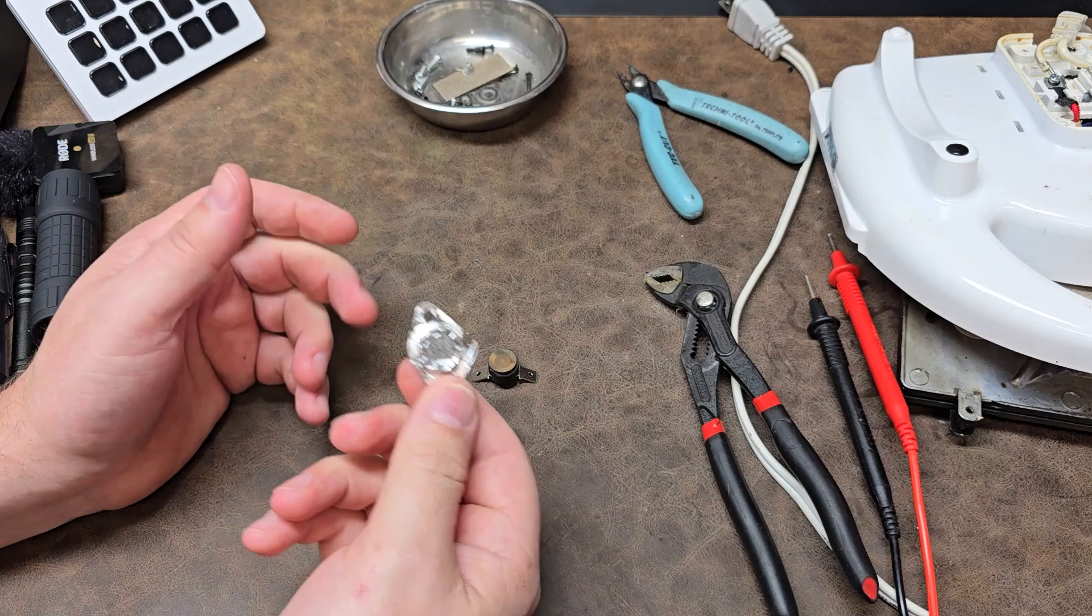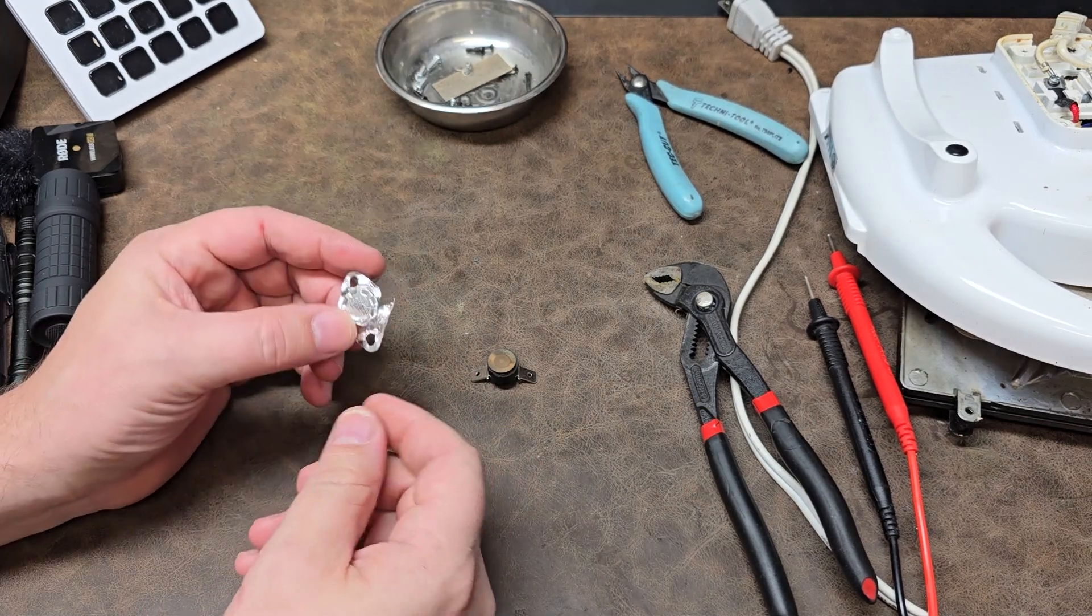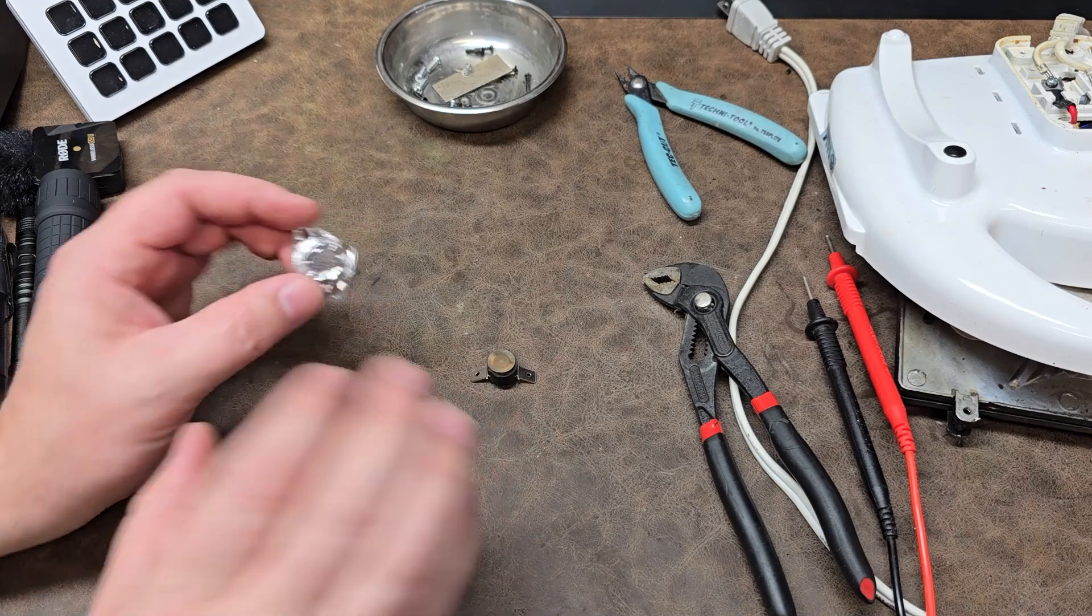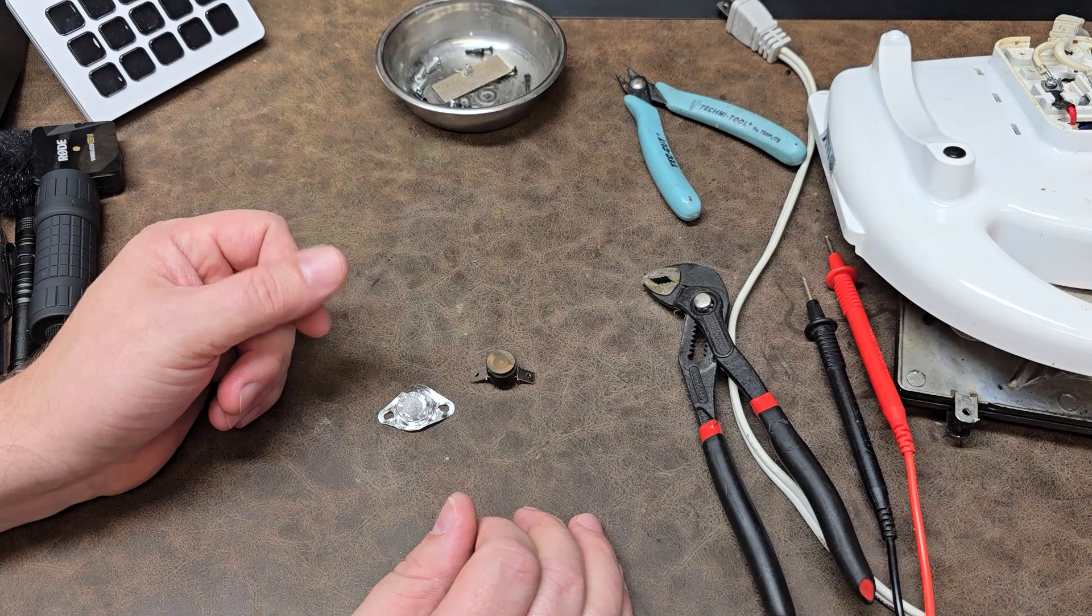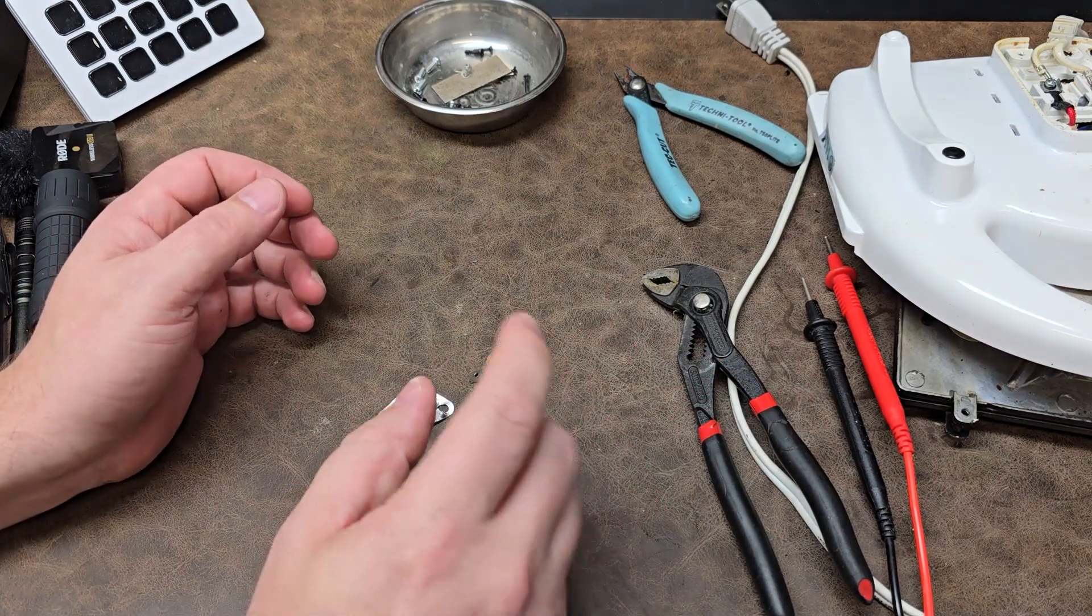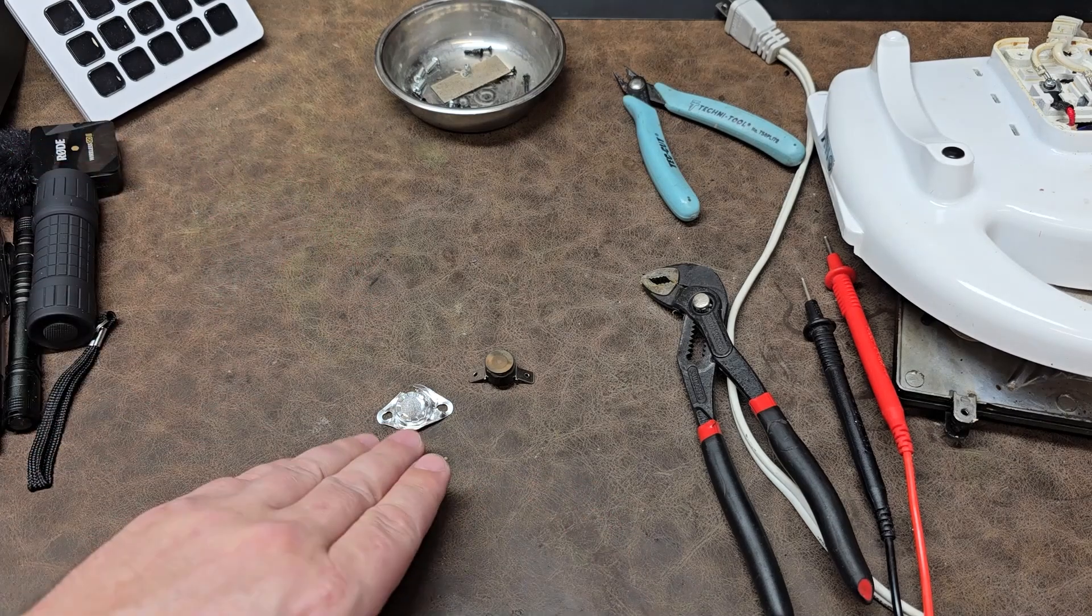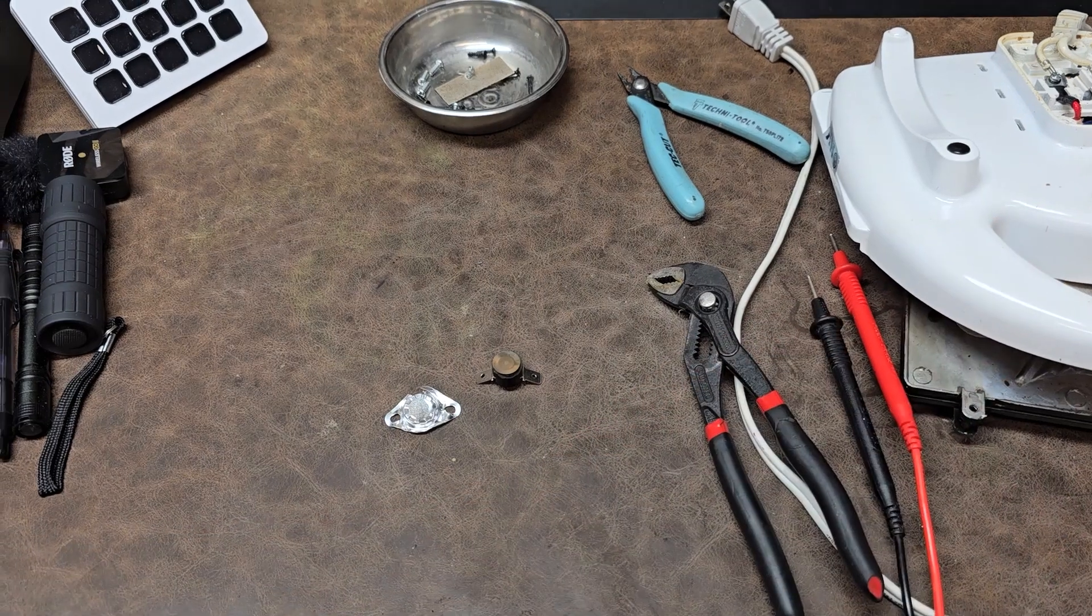This here is a device that when it gets to a certain temperature it disconnects the electricity that goes to the heating element, and as it cools off it resets automatically with no intervention from the user and it allows it to maintain a very consistent temperature. So it clicks on, clicks off, clicks on, clicks off, and by doing so, whatever the calibrated temperature is of this guy right here, that is the temperature that your device is going to run at.